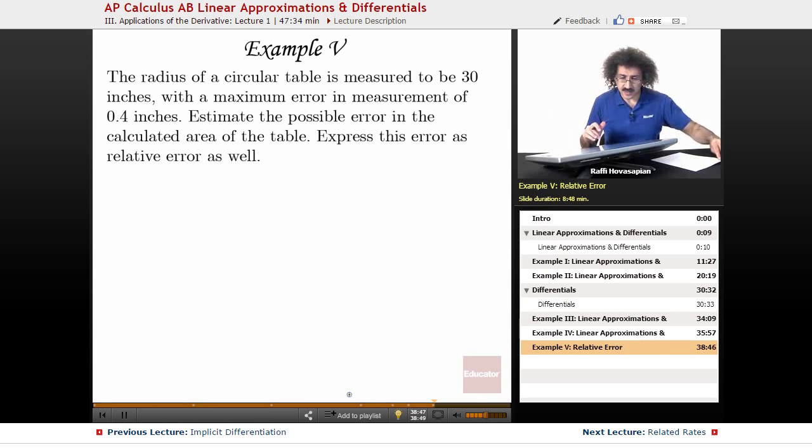Okay, so let's finish off with a nice little problem here. The radius of a circular table is measured to be 30 inches with a maximum error in measurement of 0.4 inches. So we have a table, measure the radius to be 30.